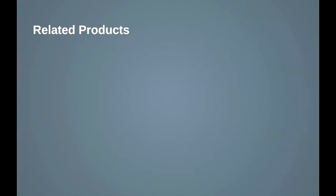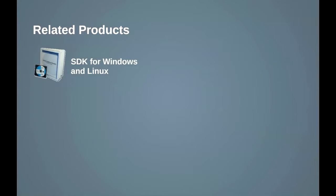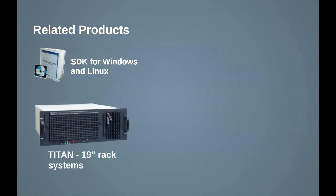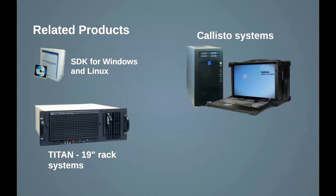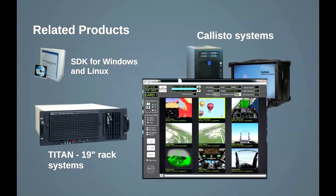If you need to develop your own custom applications around our Matrix cards, GRT offers SDKs for Windows and selected Linux versions. Would you prefer a system configured, tested, and ready to use? Contact Great River to learn more about our Titan and Callisto systems that can be delivered with the Matrix cards you specify, and with great options such as our Matrix multi-card — an easy to use application that controls up to 9 cards in a single chassis.